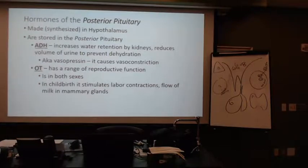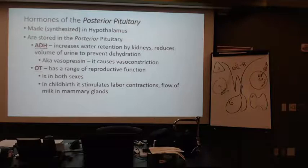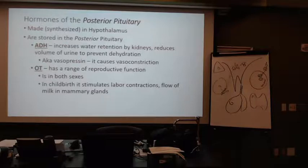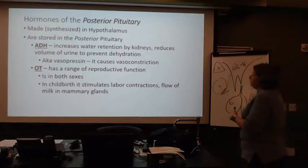The posterior pituitary just has two hormones: ADH and oxytocin. It can store them because when the body needs them, we don't have time to wait for them to be made — so it acts quickly, similar to what happens with the nervous system and a neurotransmitter, but it's a hormone. The antidiuretic hormone wants the body to retain water.